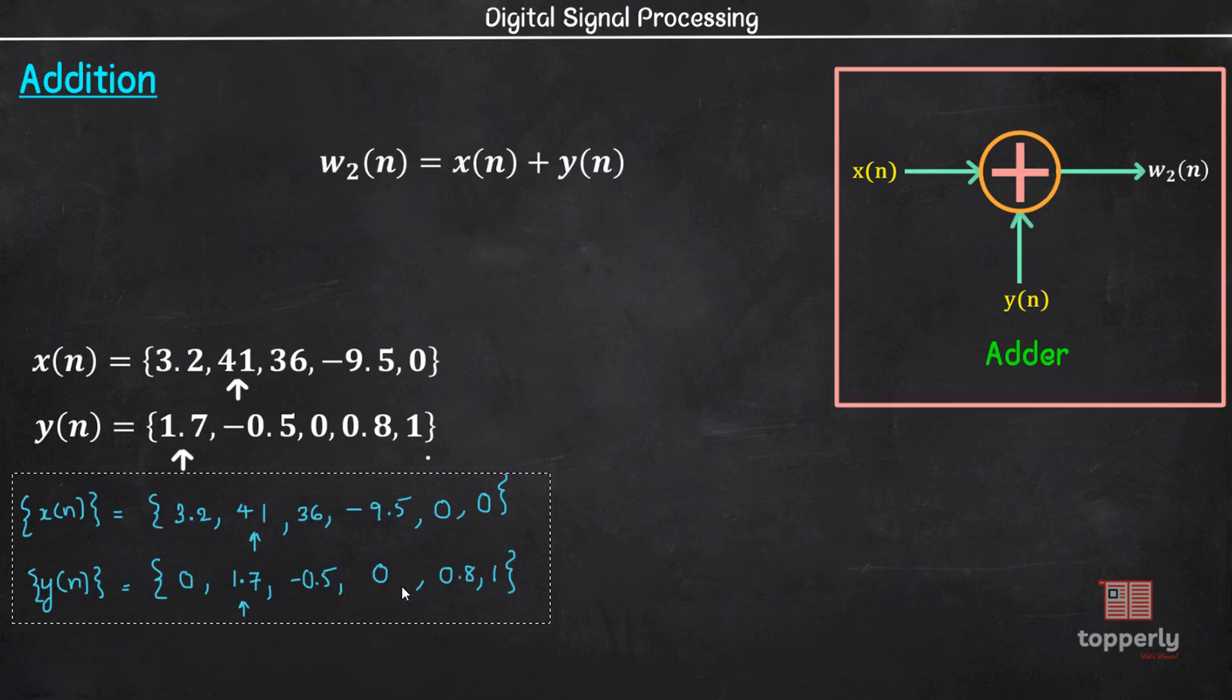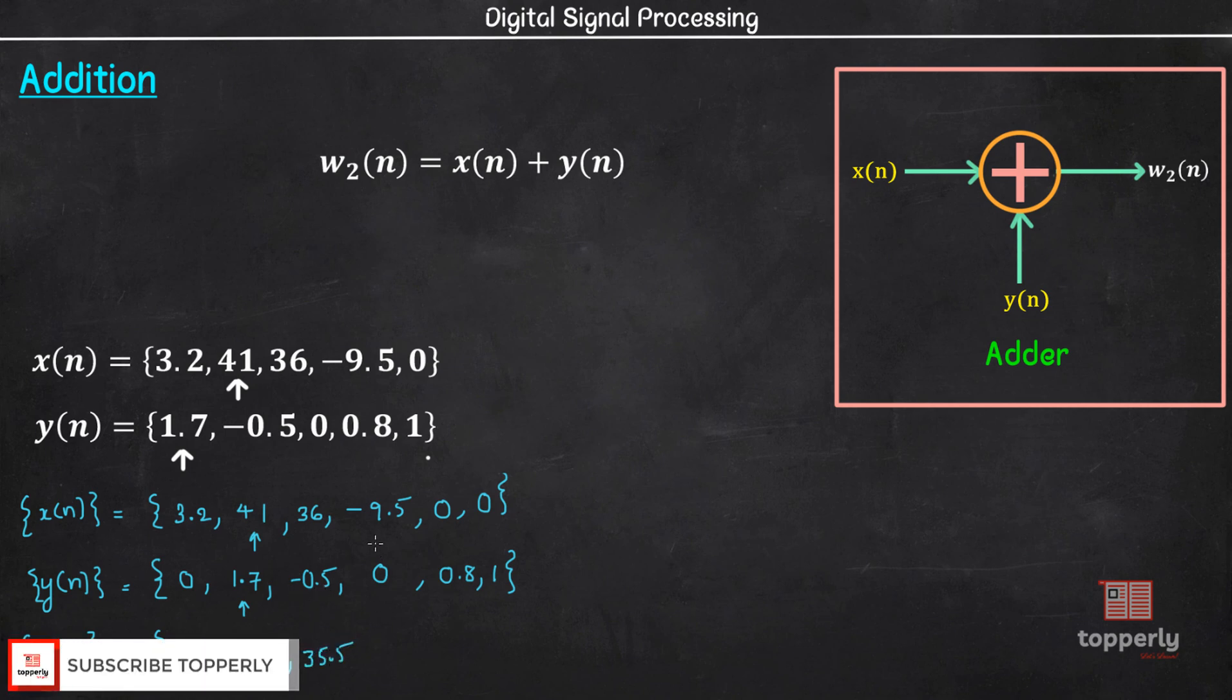Let's perform the addition operation. So w2 of n is obtained as 3.2 plus 0 which is 3.2, 41 plus 1.7 which is 42.7, 36 plus -0.5 which is 35.5, -9.5 plus 0 which is -9.5, 0 plus 0.8 which is 0.8, and 0 plus 1 which is 1. So this is the new sequence obtained by addition operation on x and y.